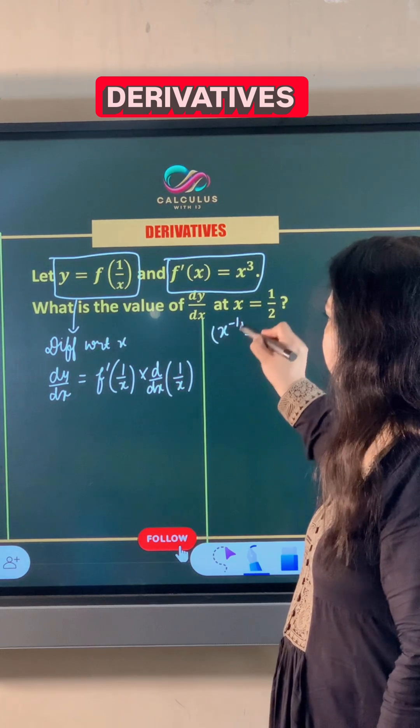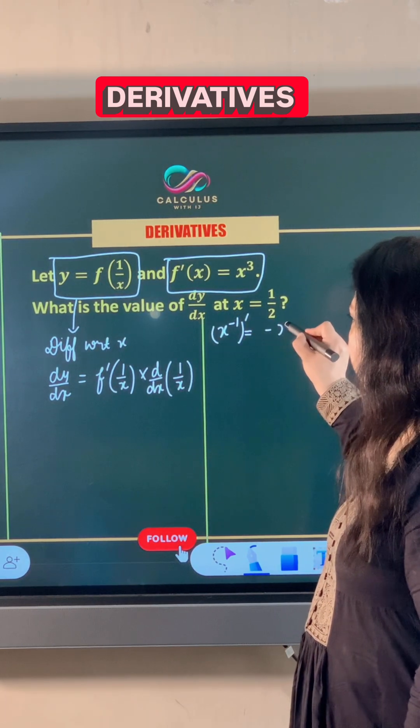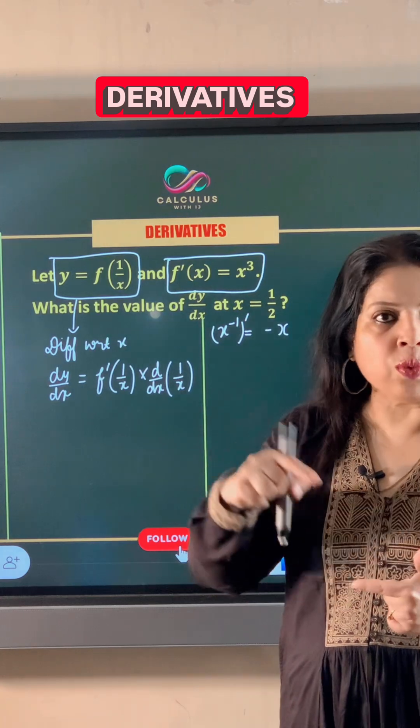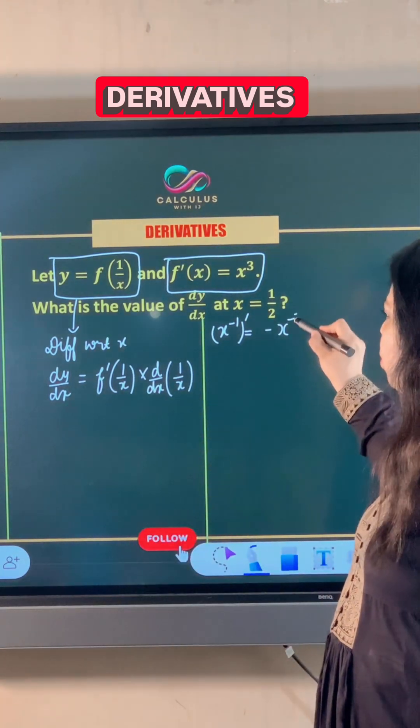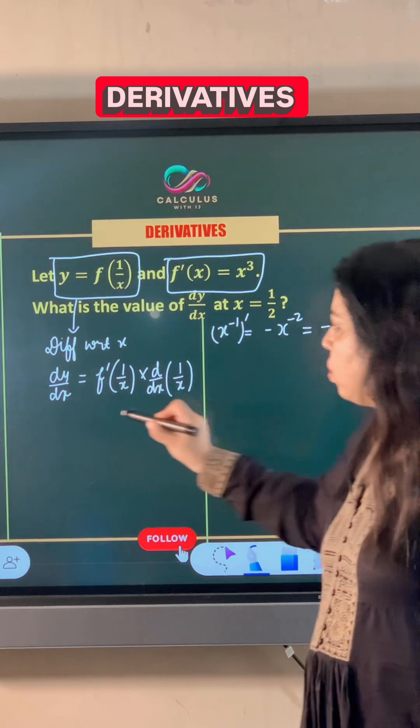So the derivative is negative x raised to the power minus 1 minus 1, which is minus 2. So this becomes minus 1 upon x squared.